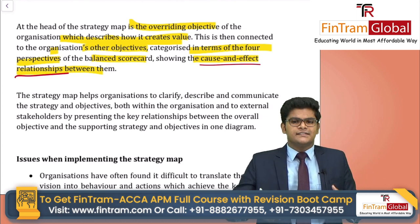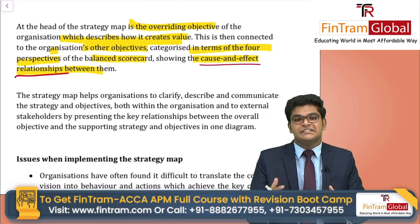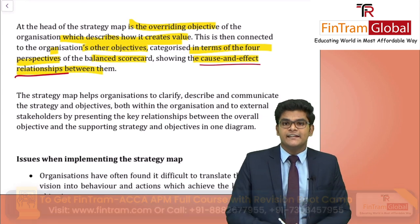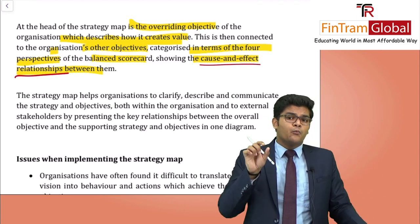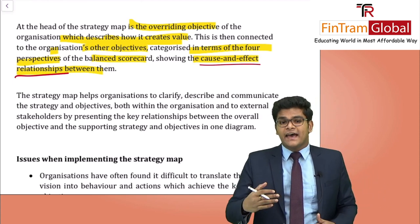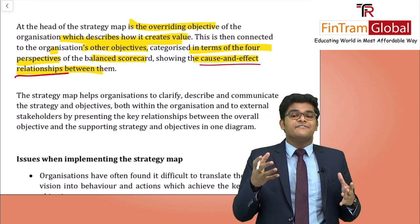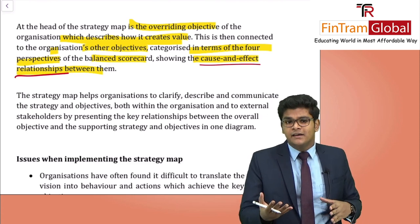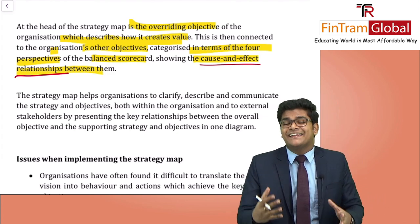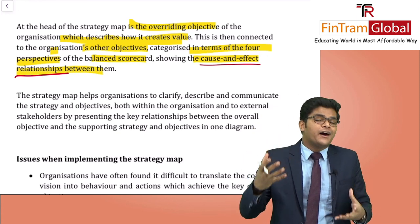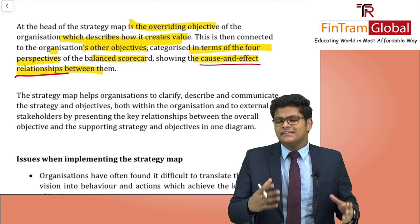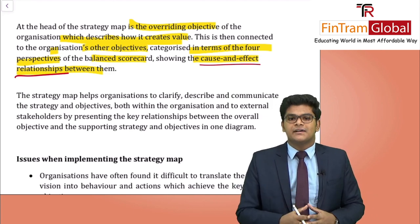Looking at the four perspectives in the strategy map — financial, customer, internal process, and learning and innovation — ask yourself why we identify the skills and competencies needed. So that we can excel in internal process efficiency. Why do we excel there? To satisfy customers. Why do we satisfy customers? So that we get sufficient revenue and profits and excel in the financial strategies. That is the cause and effect relationship in the strategy map.